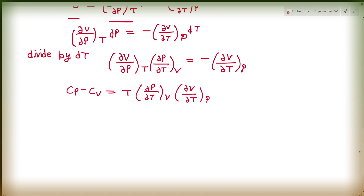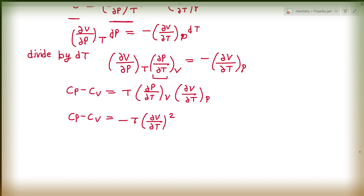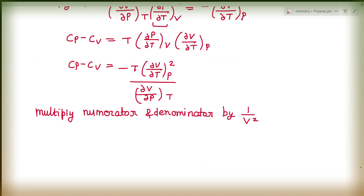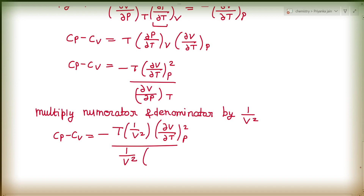Substituting this value into the CP minus CV expression, we get: CP minus CV equals minus T times (∂V/∂T) at constant P, squared, divided by (∂V/∂P) at constant T. Multiplying numerator and denominator by 1/V squared, we get: CP minus CV equals minus T times (1/V² × (∂V/∂T)²) at constant P, divided by (1/V × (∂V/∂P)) at constant T.